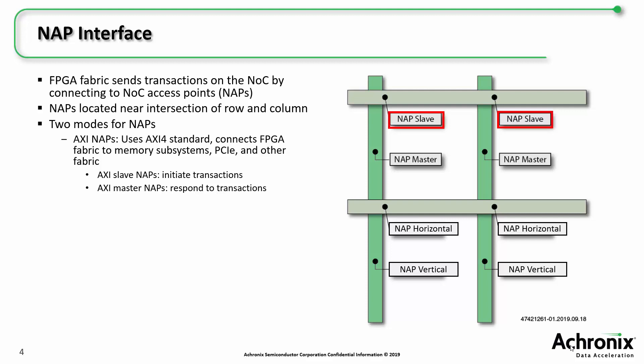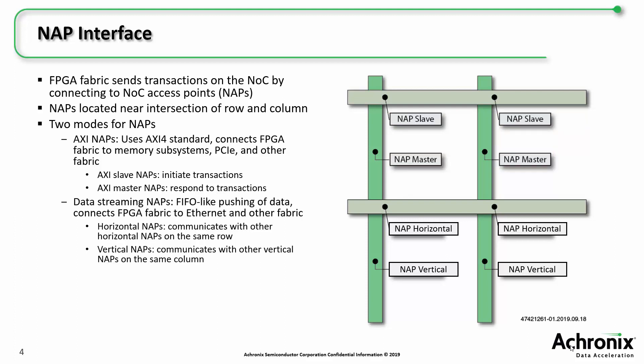AXI slave NAPs on rows connect to master logic that initiates transactions, and AXI master NAPs on columns connect to slave logic that respond to transactions. Data streaming NAPs act more like FIFOs. These connect fabric to the ethernet MACs as well as other logic in the FPGA fabric. Horizontal NAPs communicate with other logic on the same row, and vertical NAPs can communicate with ethernet or other fabric logic on the same column.